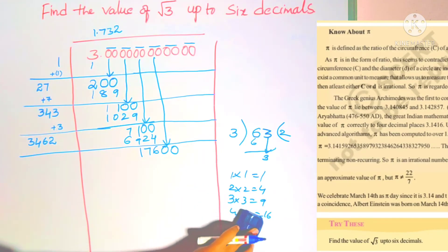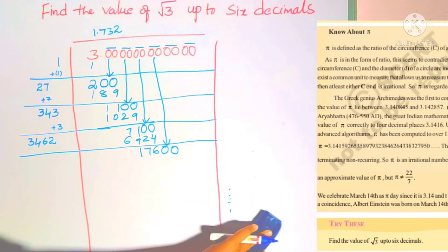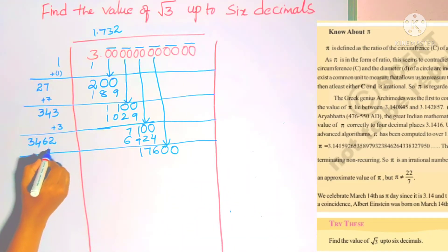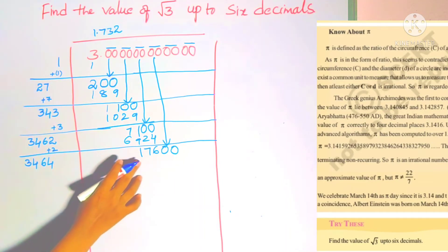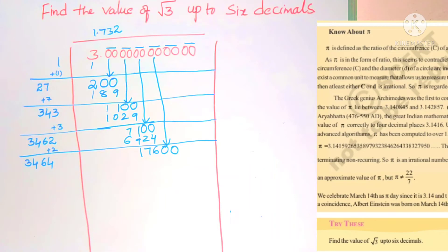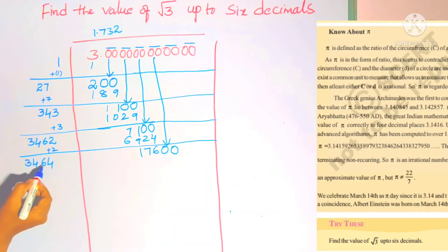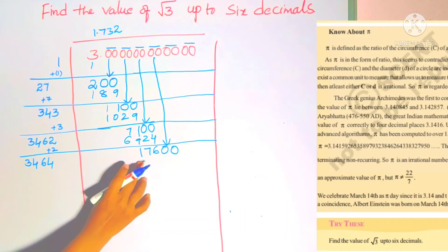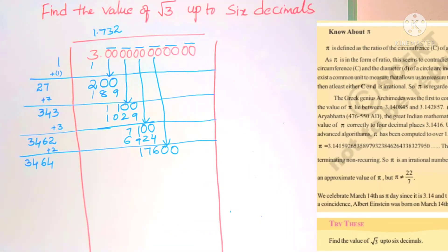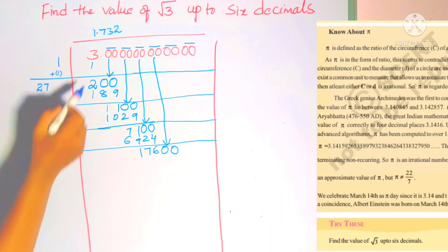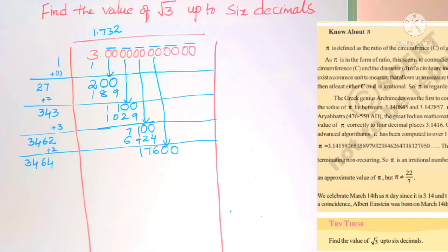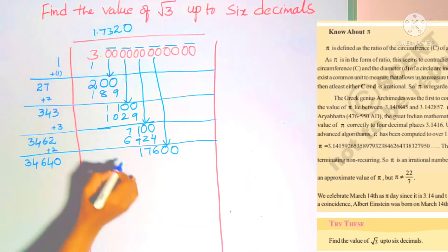The last digit we wrote was 2, so add 2: 346+2=3464. Bring down the next pair of zeros, making it 17600. Now if we try to write another digit, the divisor would become 34640-something — but 34640 is more than 17600. Since the dividend is too small, we write 0 in the quotient and bring down the next pair of zeros.